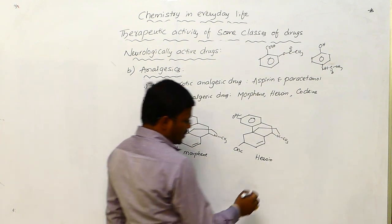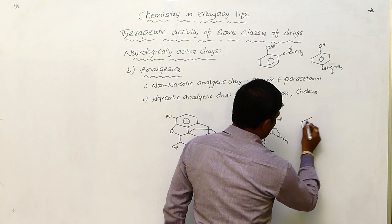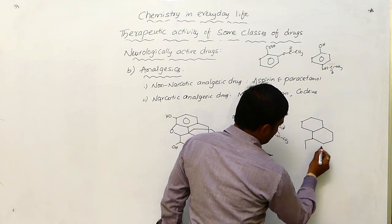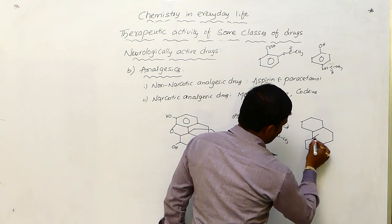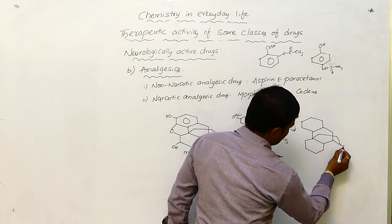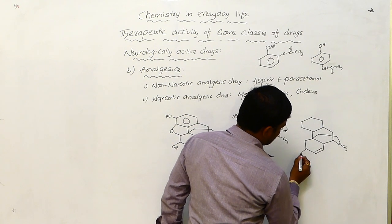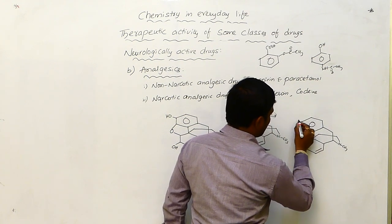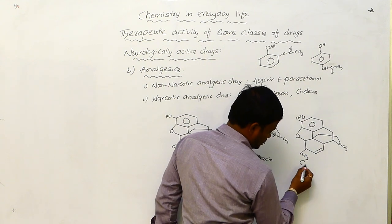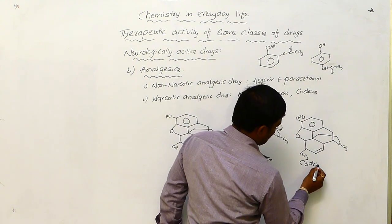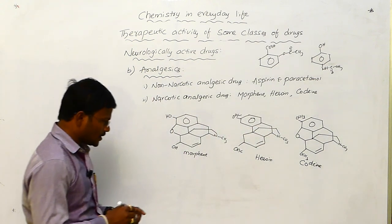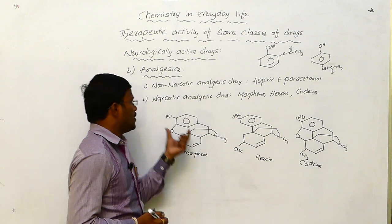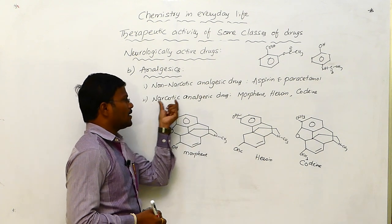And also, in case of morphine, if the two hydroxy groups are substituted with methoxy groups, then that is called as codeine. Morphine, heroin, and codeine belong to narcotic analgesic drugs.